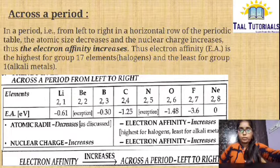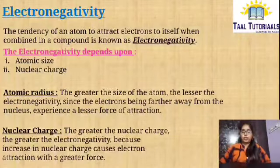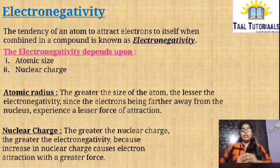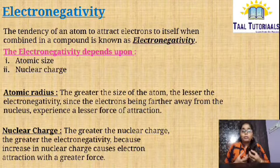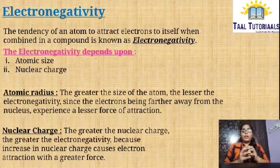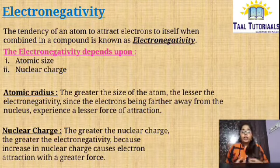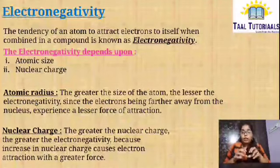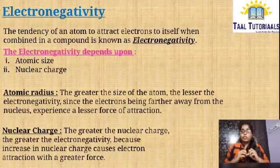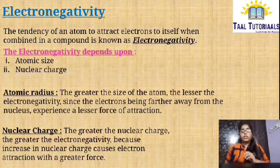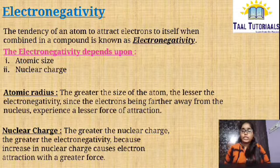Then comes electronegativity. Electronegativity is the tendency of an atom to attract electrons to itself when combined in a compound. In a compound, we have many atoms or elements, and they have a tendency to attract electrons to themselves. This is known as electronegativity.